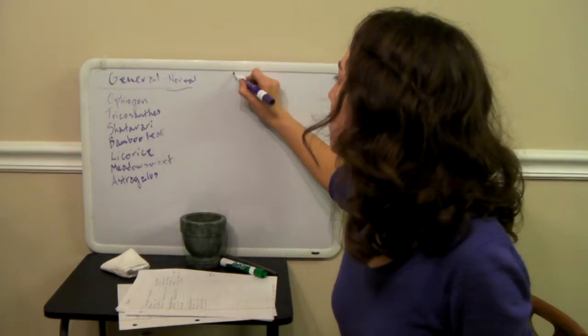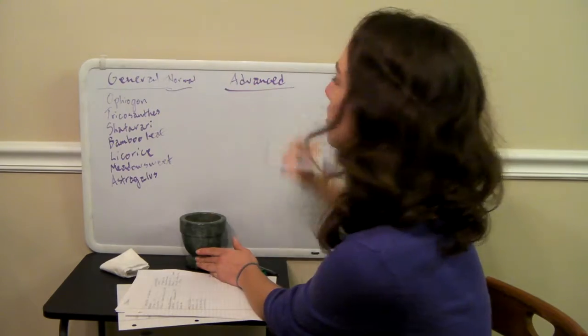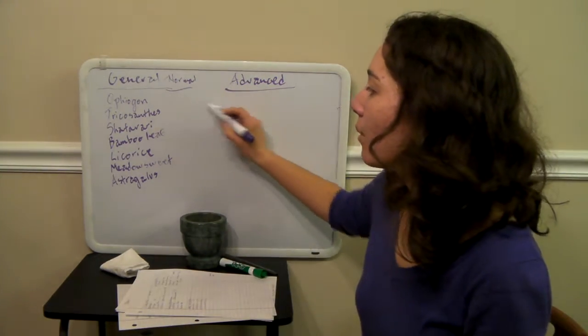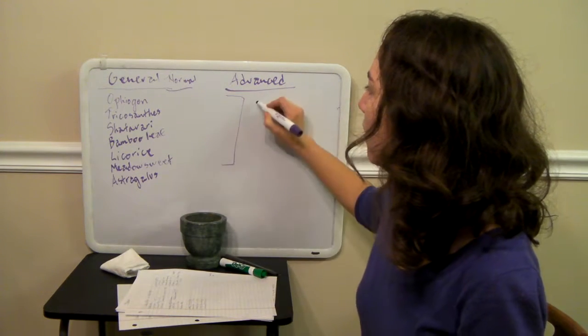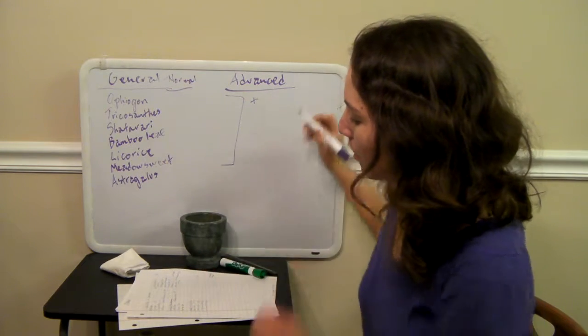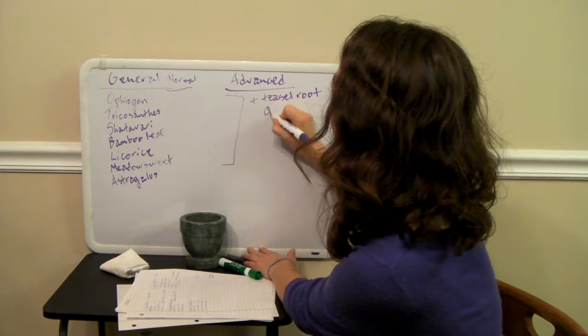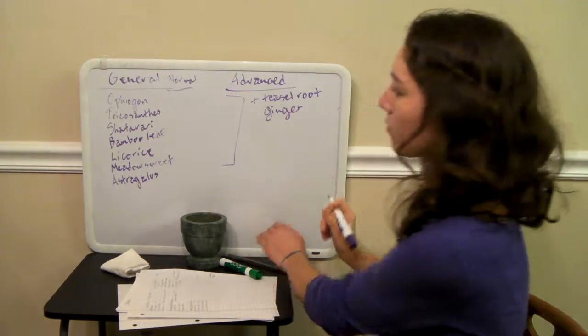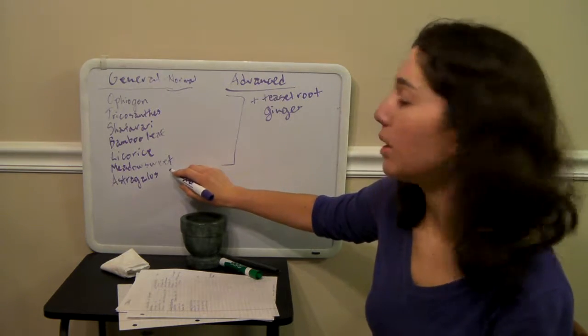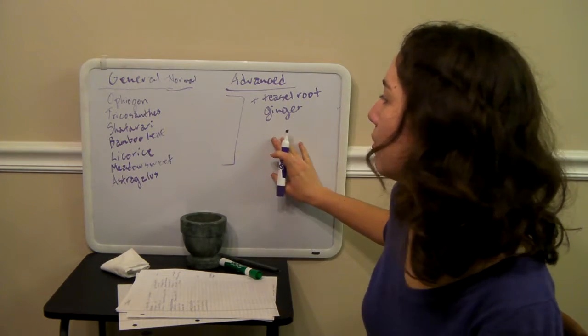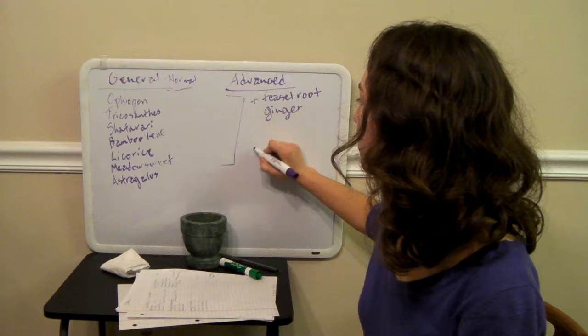If they were feeling particularly stressed, I might put in some milky oats there as well. So this would be a normal person with diabetes. Now if it was advanced, so if it was an advanced condition that was really bad, I would include all of these. So I would use all of these other ones. But I would also add some teasel root, ginger, and I would take out the meadow sweet, because meadow sweet is too cooling for someone who needs this yang support. So no meadow sweet.